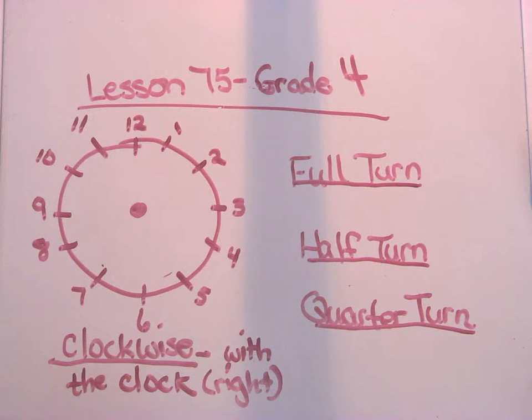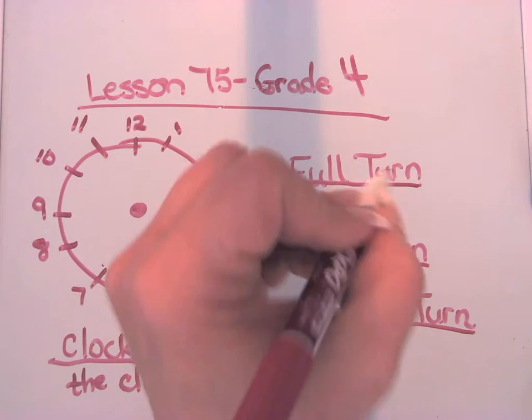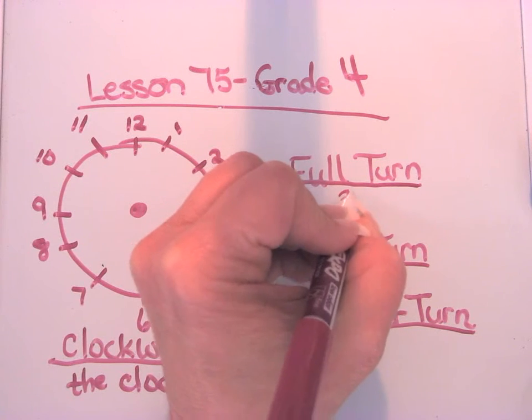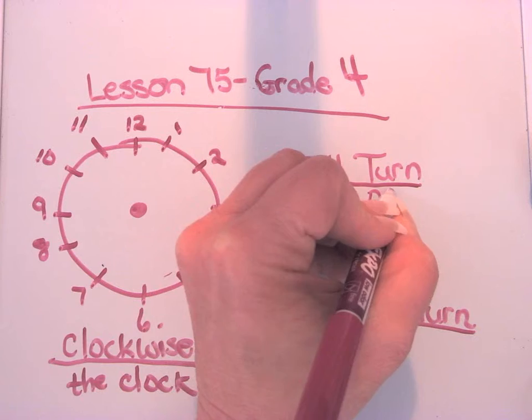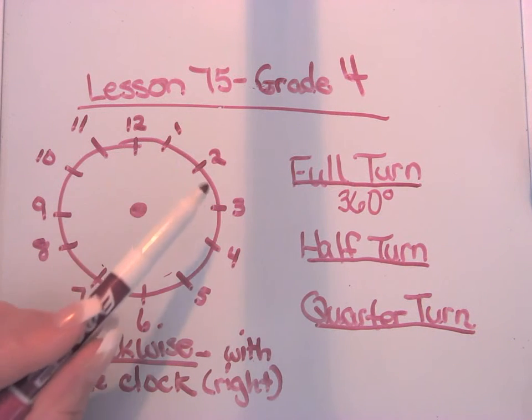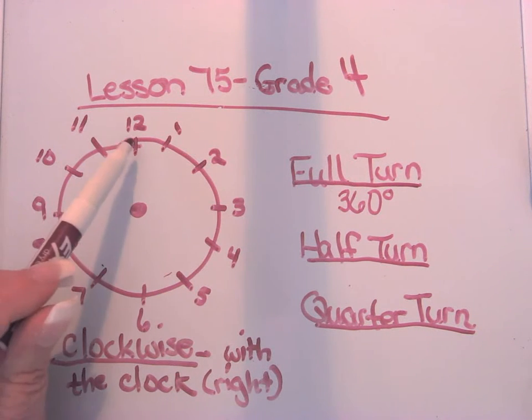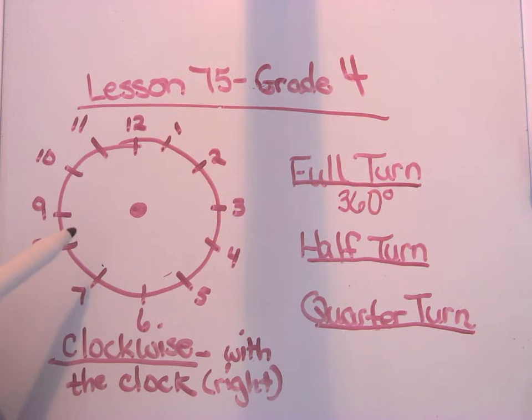Now, when we talk about a full turn, a full turn is what we call 360 degrees. That would mean I would start at 12, and I would go all the way around and end up at 12 again. That's 360.